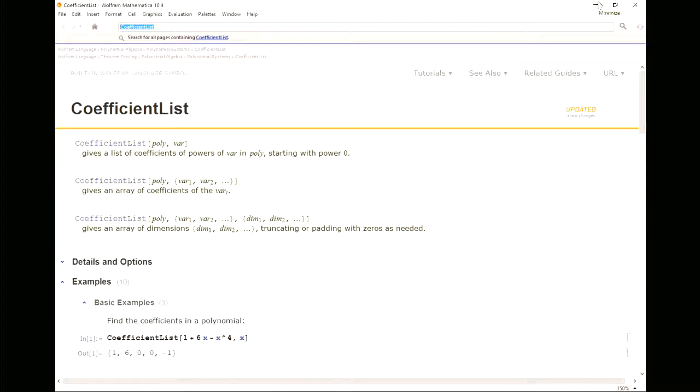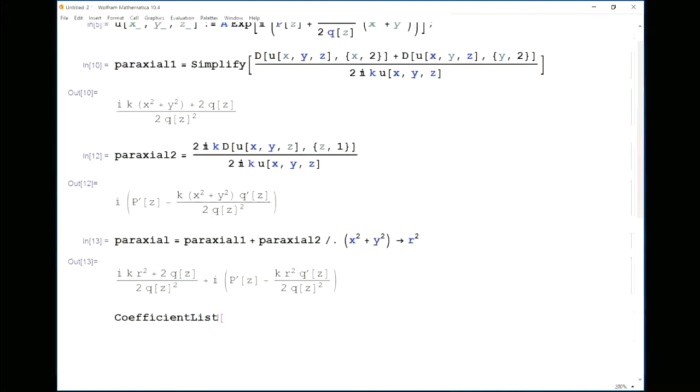You just specify the polynomial, specify the variable, and it will tell you all the coefficients. So we're going to use that on the paraxial equation, on the left-hand side of the paraxial equation. And the variable we care about is r.